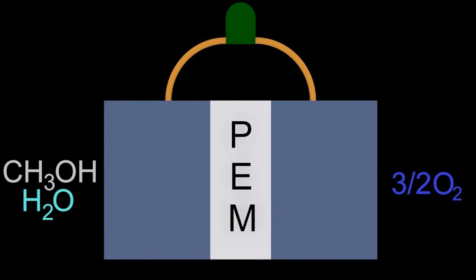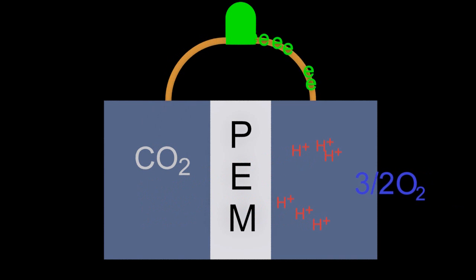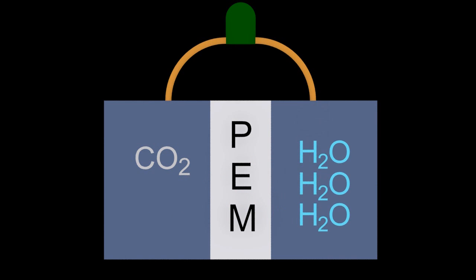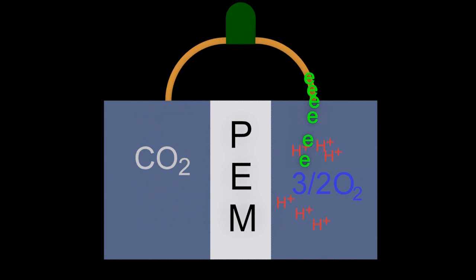The second one you need to know is methanol as a fuel in a fuel cell. So methanol and water turns into carbon dioxide, six protons and six electrons. The electrons again go around the external circuit, can do work, react with the protons and oxygen to make water. So again, two quite benign products of fuel cells, carbon dioxide and water.